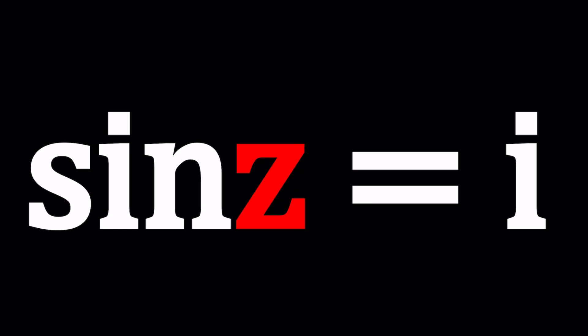So we have sine z equals i and we're going to be solving for z values. Now can we find sine of any angle? Yes we can, and that's always going to be between negative 1 and 1. So if z is real, its sine is bounded. But in the case of complex numbers, there are no limits, there are no boundaries. So sine z can be anything, doesn't have to be between negative 1 and 1 inclusive. It can even be imaginary.